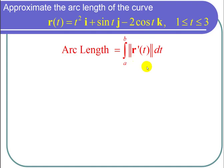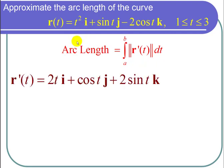And remember this integrand is just the speed. So I find R prime of t by taking a derivative and I get 2ti plus cosine of tj and then plus 2 sine of tk.